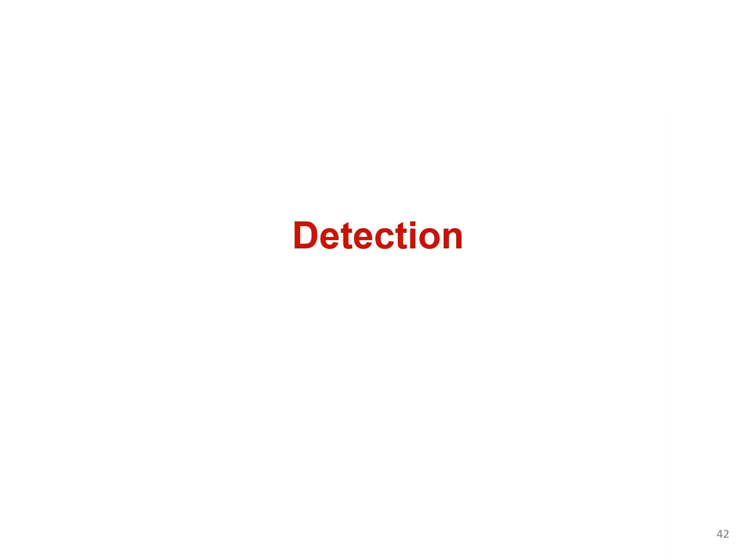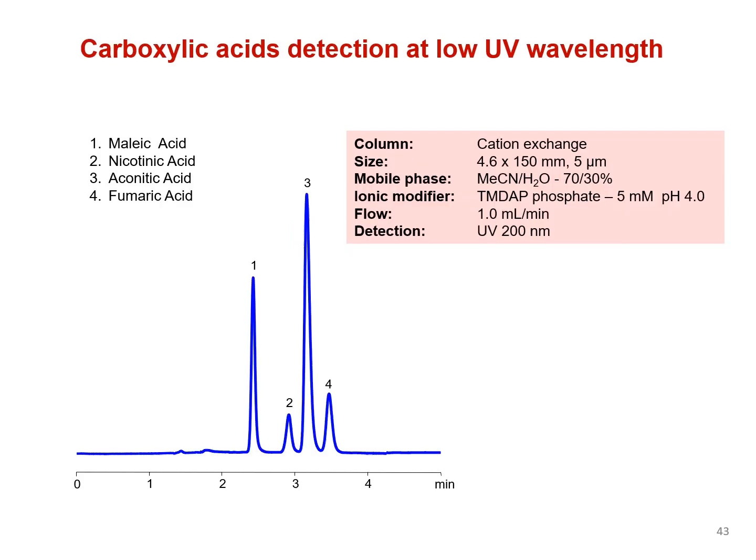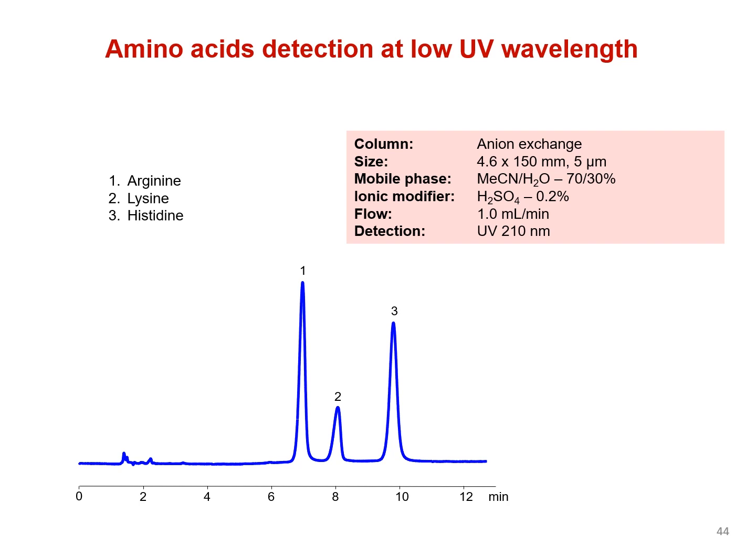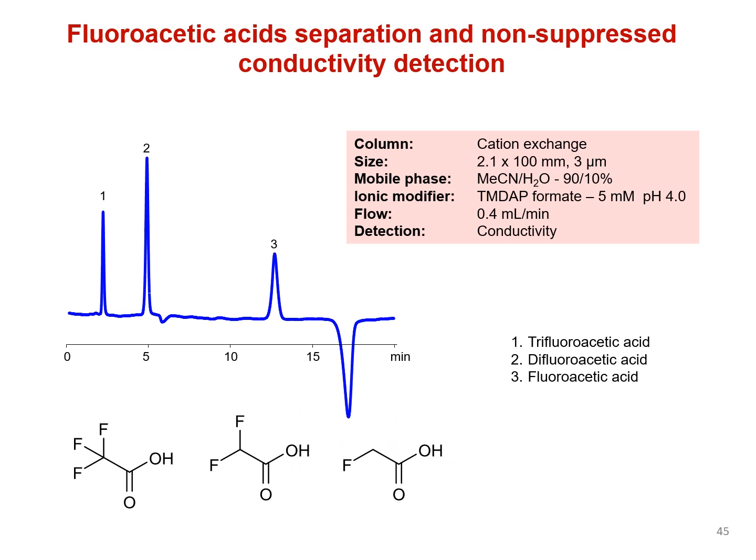BIST is not only universal in the compounds it can retain and separate but also in the types of detection that it is compatible with. BIST is compatible with detection methods in the low UV around 200 nanometers. Here different organic acids are retained and separated using a TM-DAP modifier, and here different amino acids are retained and separated using a sulfuric acid modifier. Notice how the column switched from cation exchange to anion exchange and therefore we needed to use a different ionic modifier. BIST is also compatible with non-suppressed conductivity detection, as shown here with the separation and retention of three different fluoroacetic acids.